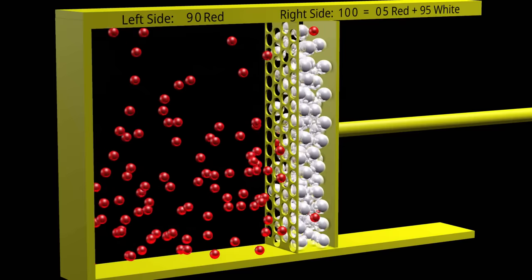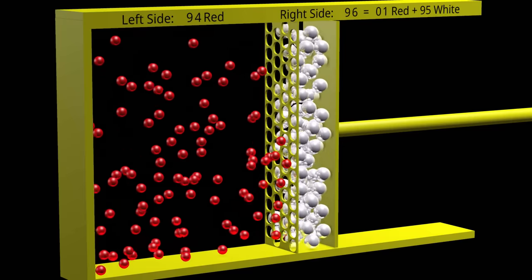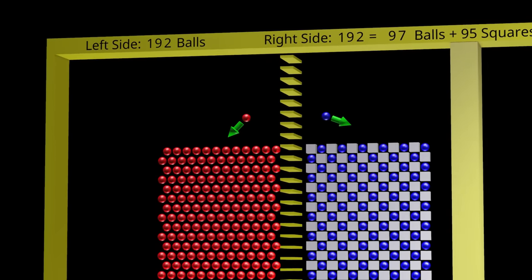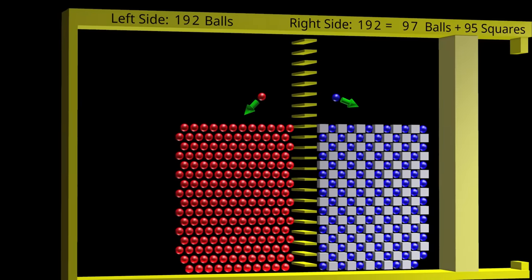Next, we will show reverse osmosis in a different way. In the next example, there will be zero gravity. All the balls are able to pass through the membrane, but the square white particles are not.